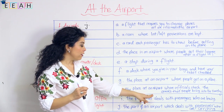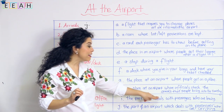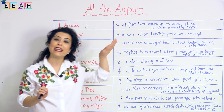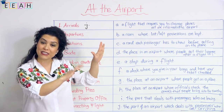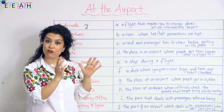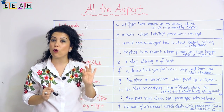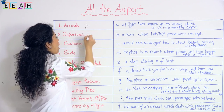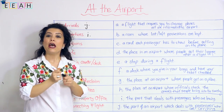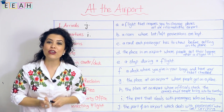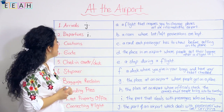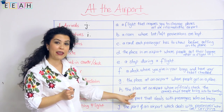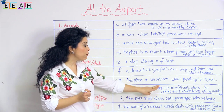What about 'departures'? It's the opposite of arrivals. Departures is the part of the airport that deals with passengers who are leaving — those who are leaving the city or country, they're going away. So that matches with I.